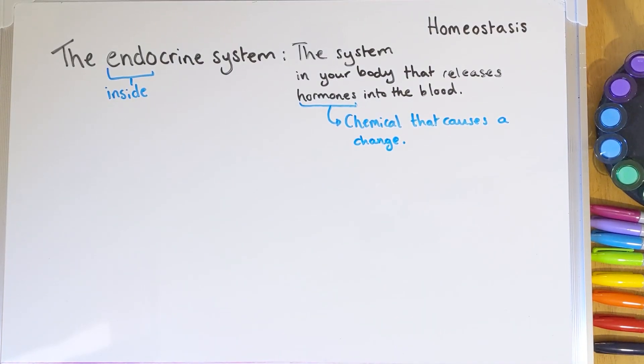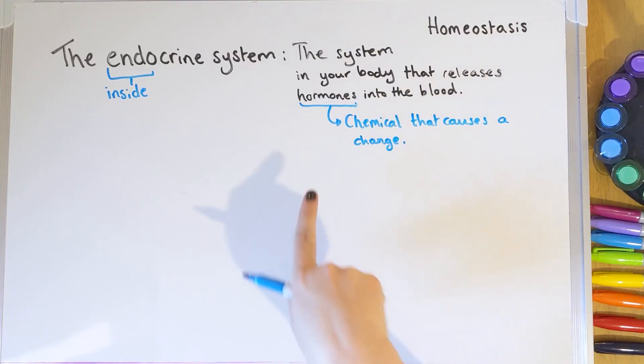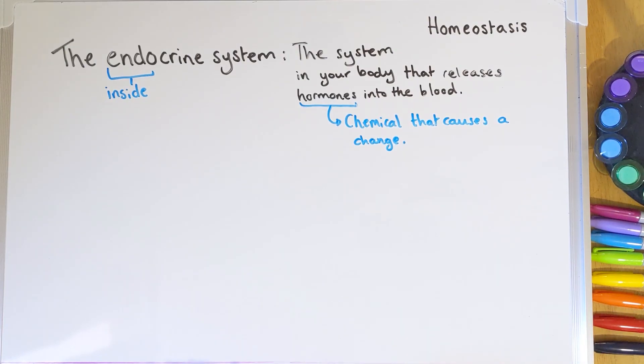For example, we're going to be looking at insulin. Insulin is the hormone and it causes a change — it causes your body cells, especially in your muscles and liver, to take glucose from your blood and store it. So the hormone is the chemical that's making the change. Your endocrine system is made up of lots of different parts, made up of things called glands. Glands are types of cells that work together to secrete — squeeze out — those hormones directly into your blood.